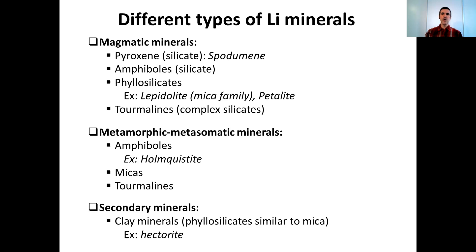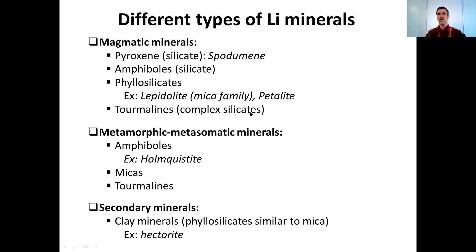Among the magmatic minerals we can also find phyllosilicates — a very large family of complex silicates. In the phyllosilicate family we can find the mica family, and in the mica family one mineral is very important for lithium: lepidolite. Another important phyllosilicate for lithium is petalite. We will talk about these minerals a bit later. And finally, among magmatic minerals, we can find tourmalines, which are complex silicates.